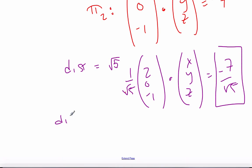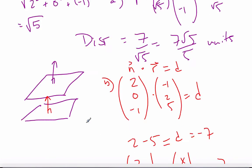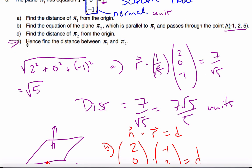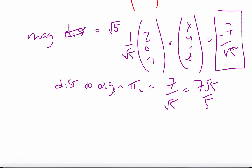So the distance, oh, this is magnitude, not distance. The distance to the origin of plane 2 is 7 over root 5, which is 7 root 5 over 5. Now, but this isn't a negative value. And so the total distance, if I look at part D, hence find the distance between plane 1 and plane 2. Well, they're on opposite sides of the origin.